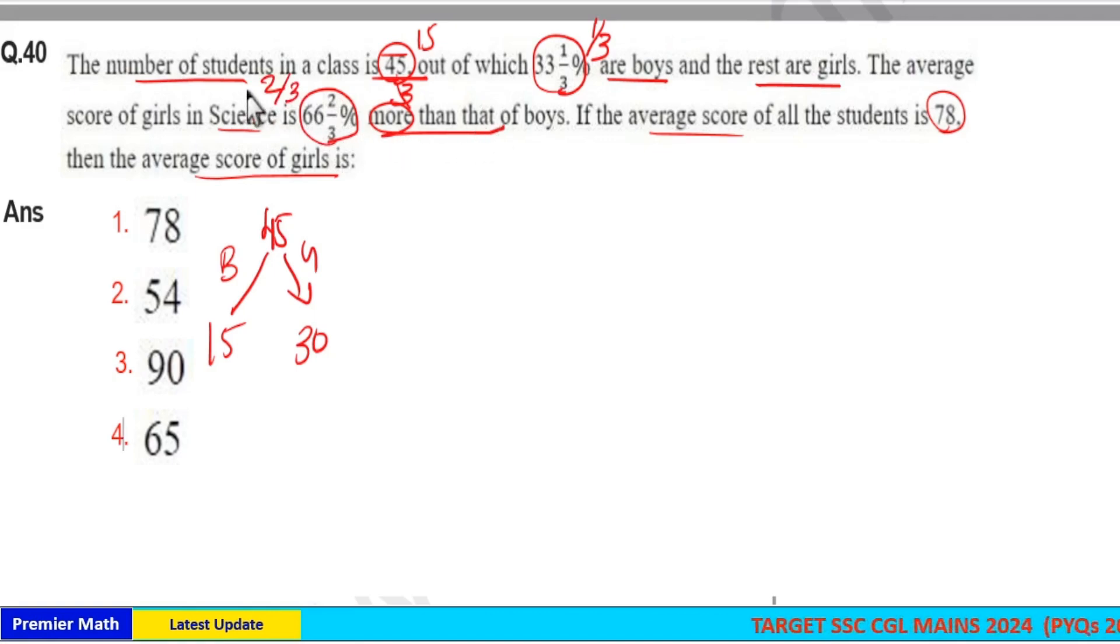Here ⅔ more than boys means plus ⅔ is the fraction. The average score of girls in science is ⅔ more than boys, means if 3 parts is the boys' score, then 3+2 = 5 parts is the girls' score.